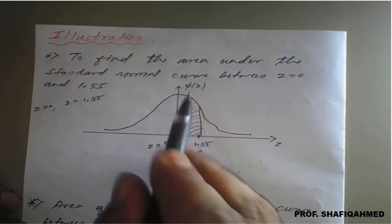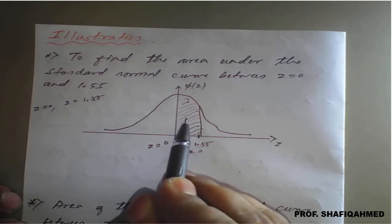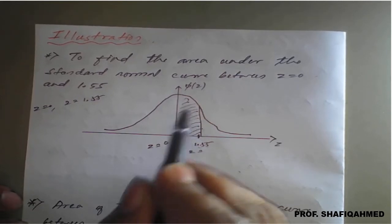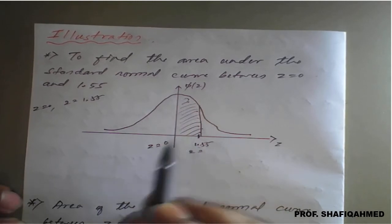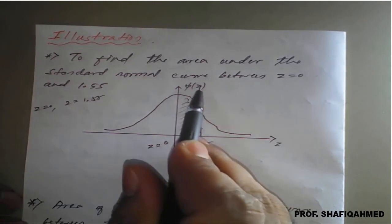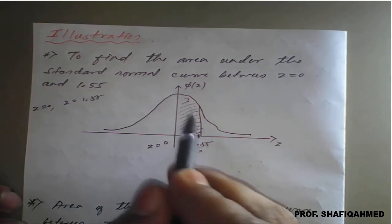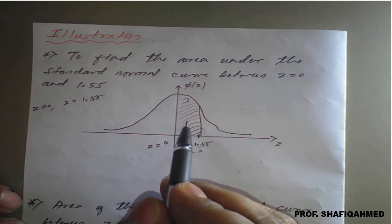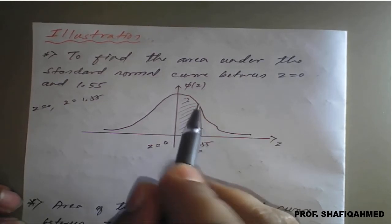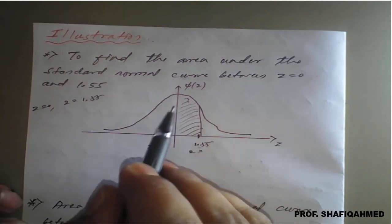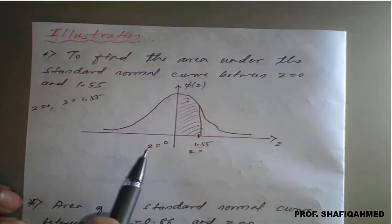This area is nothing but φ(1.55). We can see the table or use the calculator to find this area — theoretically we apply integration with φ(z) between 0 and 1.55. We will use the standard normal table values or the calculator to get the area and find the answer.